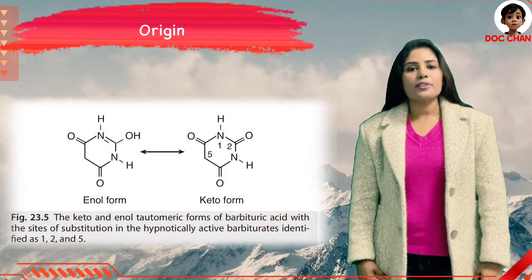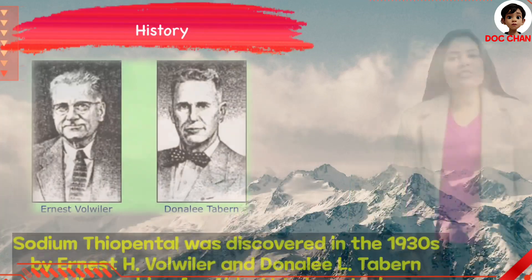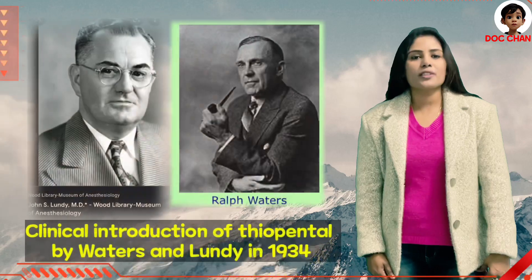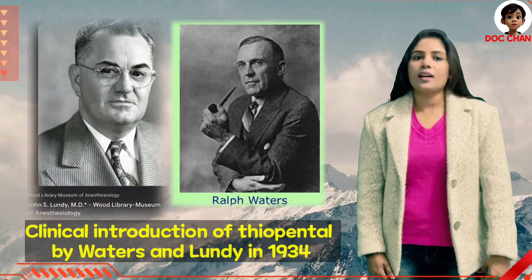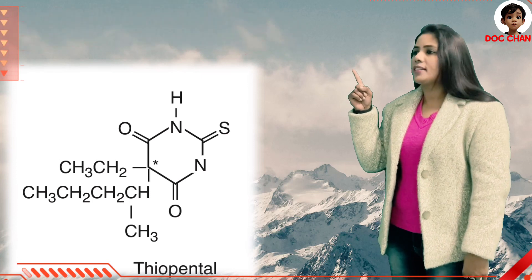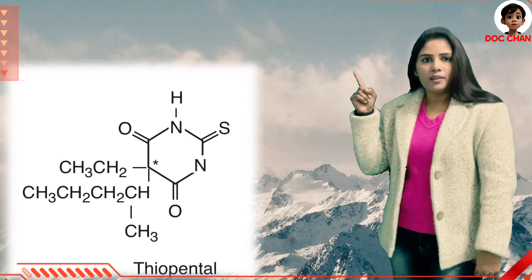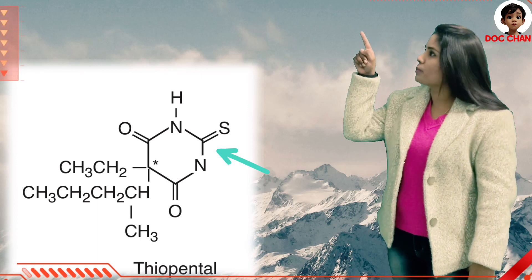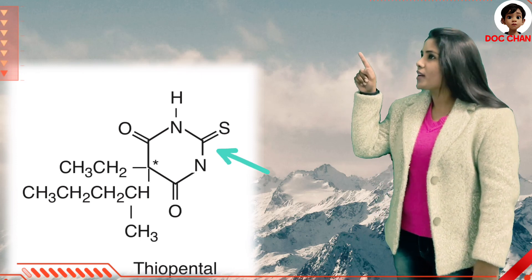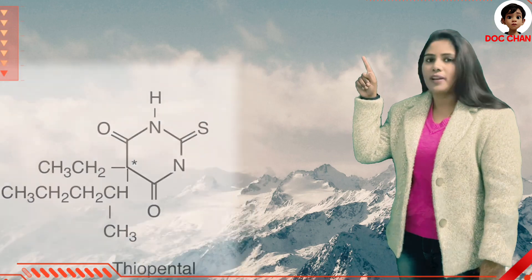Thiopental is the sulfur analog of barbiturate, that is pentobarbiturate. The drug was synthesized in 1932, but first used in 1934 by Lundy and Water. Looking into the composition, it is sodium 5-ethyl-5-(1-methylbutyl)-2-thiobarbiturate. The position of the thiol group on the second part of the structure suggests its high lipophilicity, which makes it faster onset of action.